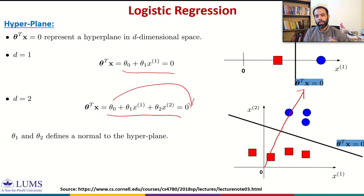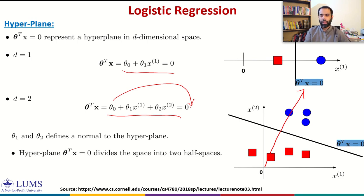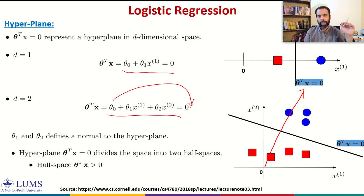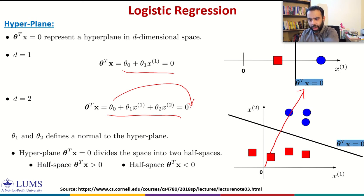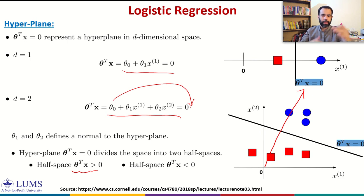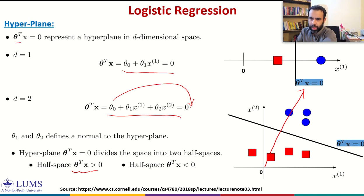When d equals 3, theta transpose X equal to 0 represents a plane in three-dimensional space, again dividing it into two half spaces. In general, the hyperplane theta transpose X equal to 0 divides the space into two half spaces: theta transpose X greater than 0 and theta transpose X less than 0. The take-home message is that theta transpose X equal to 0 represents a hyperplane in d-dimensional space.